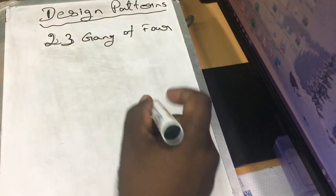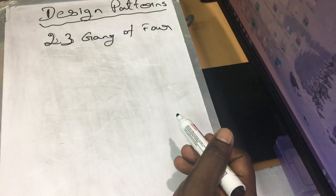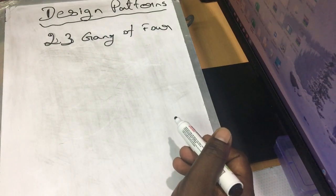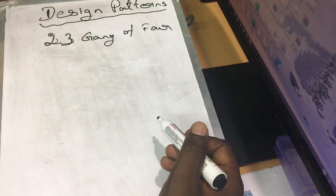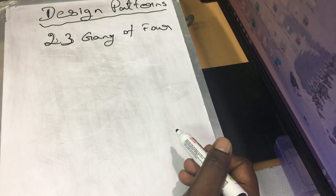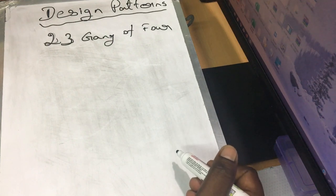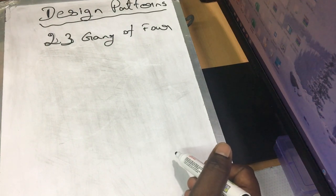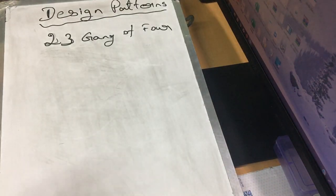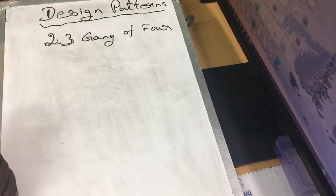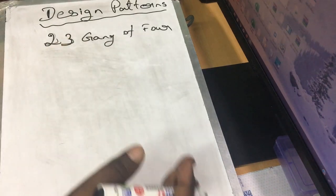If you want to use the design pattern, it is an OOP concept. If you want to use object-oriented programming, we want to use the design pattern. If you want to use the design pattern, you need to create an object. What we want to do is design pattern. If you want to design the architecture, you can see all the design patterns more easily.